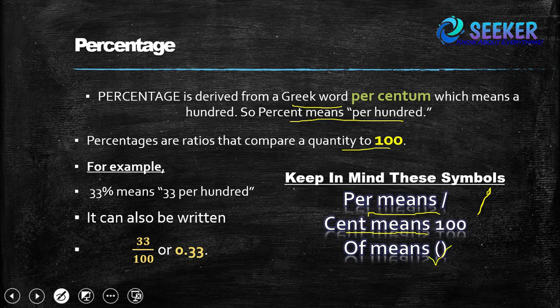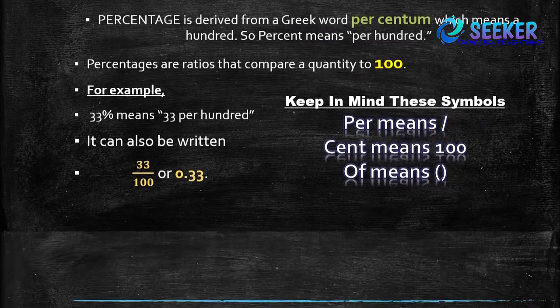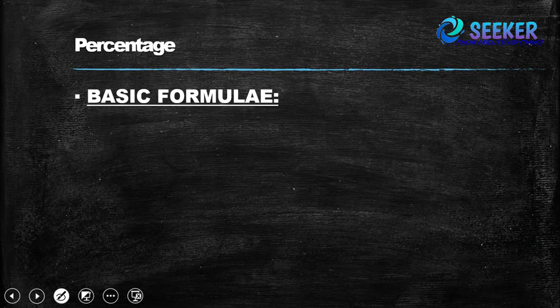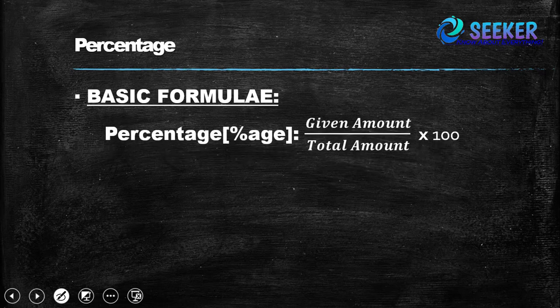So 'per' means division, 'cent' means hundred, and 'of' means multiplication. This symbol is usually used for the process of multiplication. So to summarize: per means division, cent means hundred, and of means multiplication.